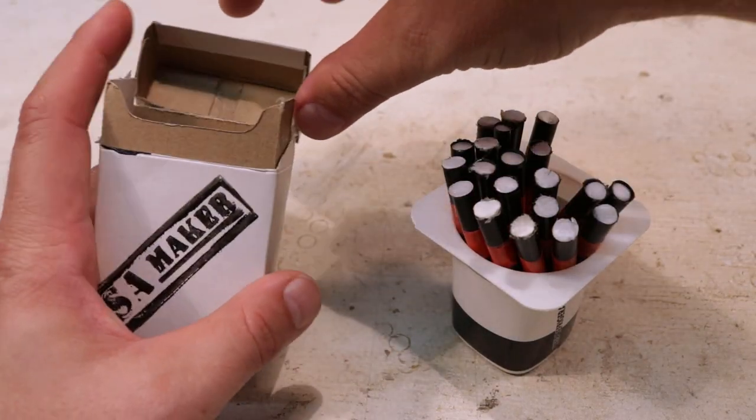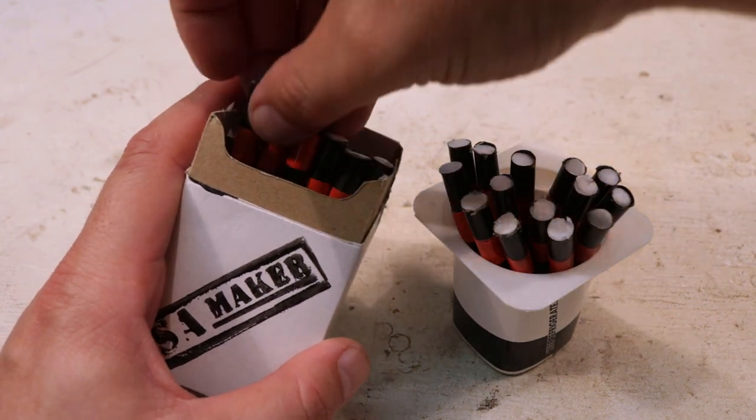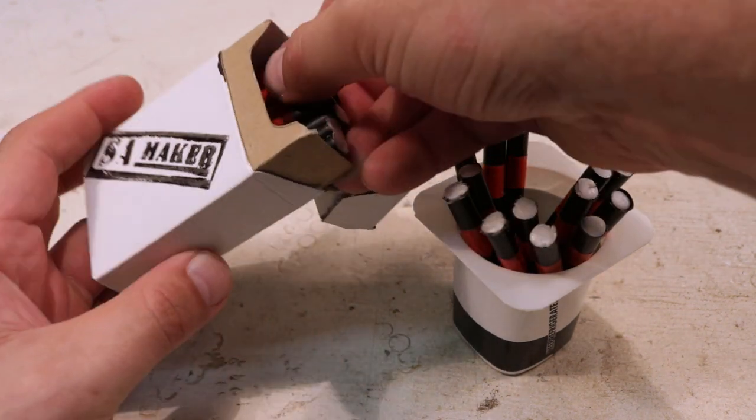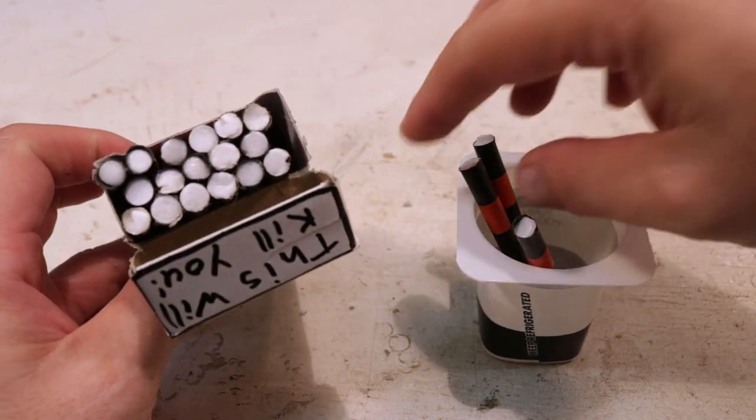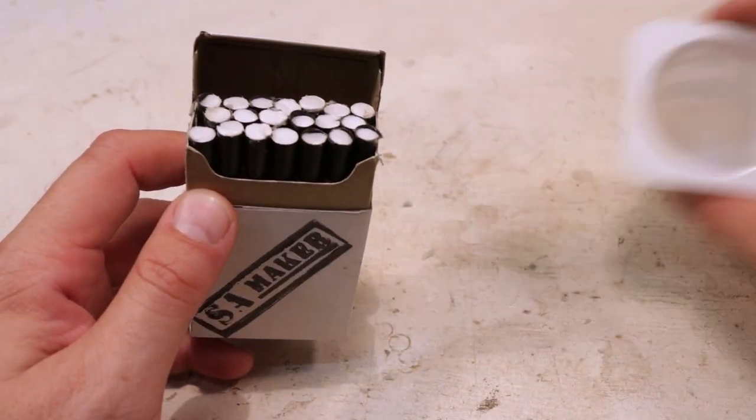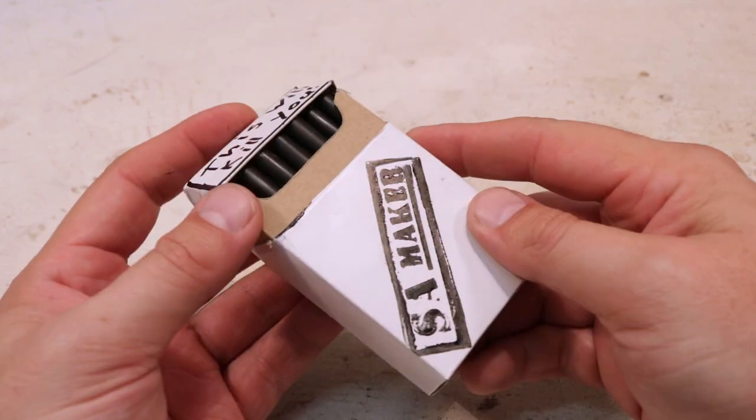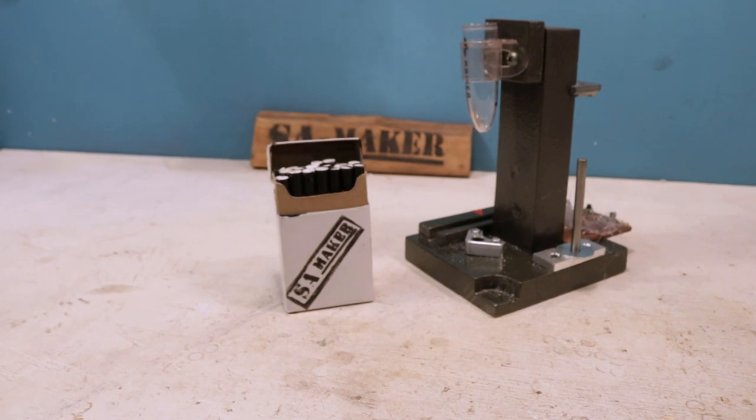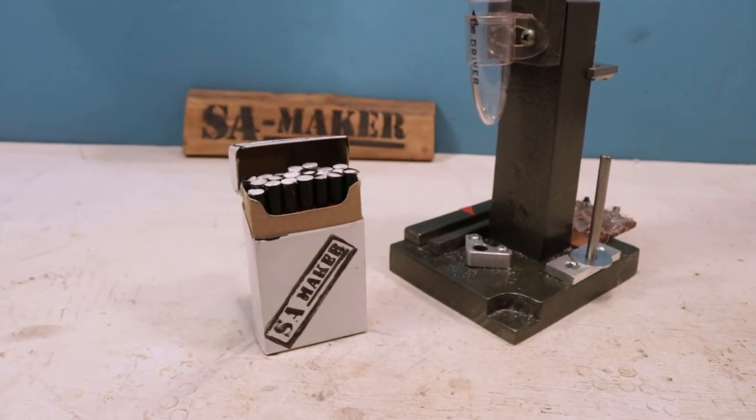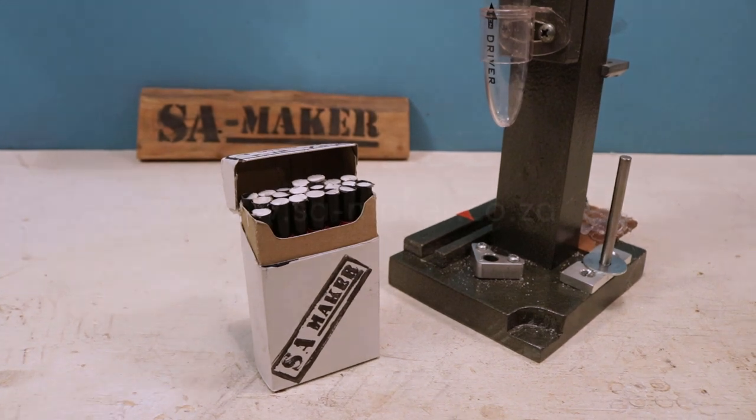Fill the case with finished cigarettes. Seven at the bottom, six in the middle, and seven on top. This is how you make a prime cigarette.